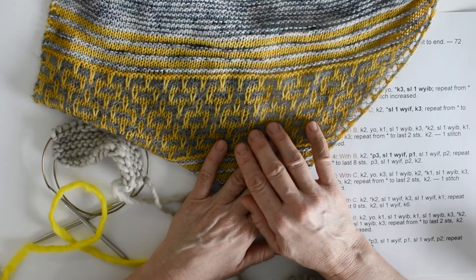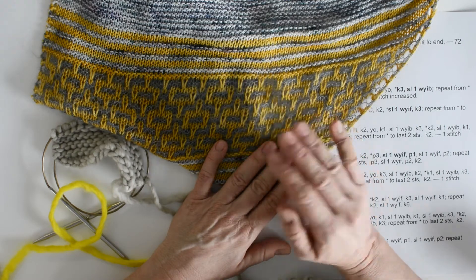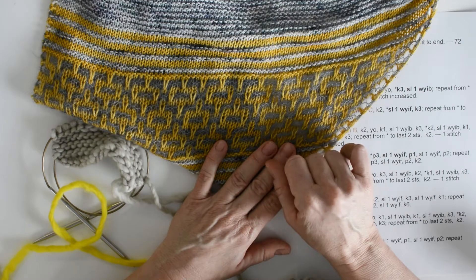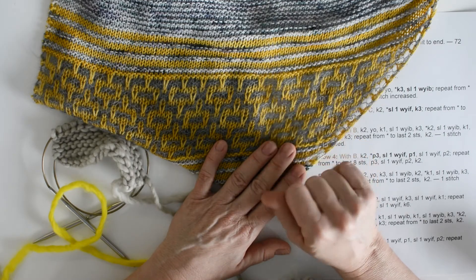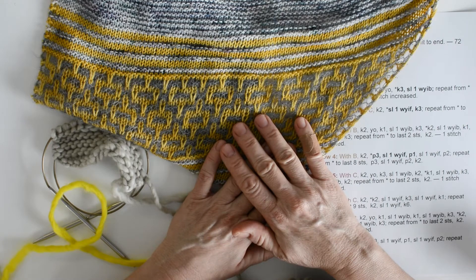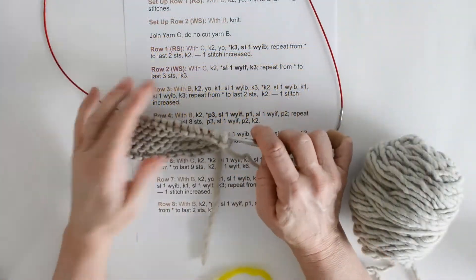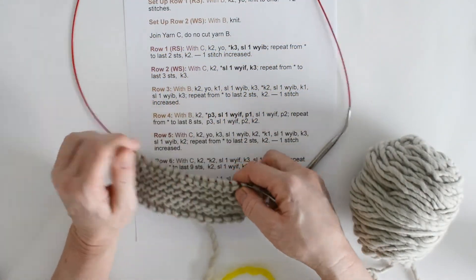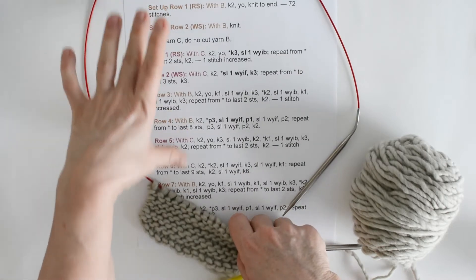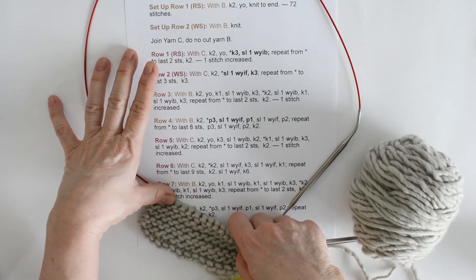In mosaic knitting, when we slip a stitch, we always slip the stitch purlwise. Otherwise, our stitch will be sitting in the wrong direction on our needle, and we may inadvertently twist it on the next row, and we don't want that to happen. Okay, so let's see that in action. Here's our pattern, the beginning part of one of our mosaic patterns.